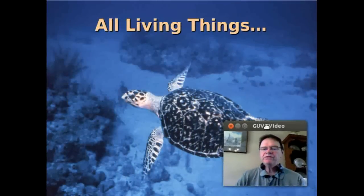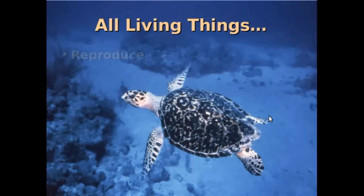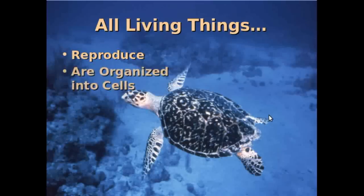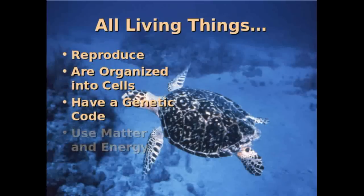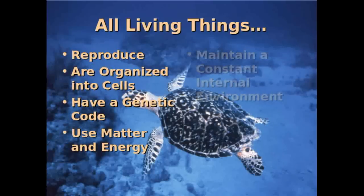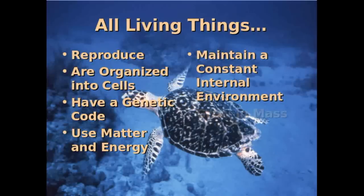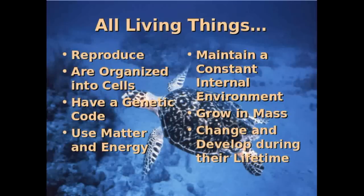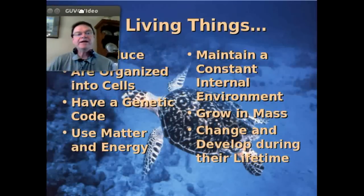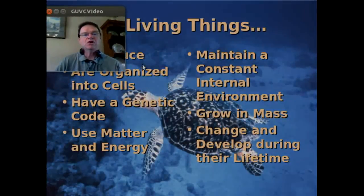So what do living things do? They reproduce. They're organized into cells. They have a genetic code. They use matter and energy — what we call metabolism. They maintain a constant internal environment — homeostasis. They increase in mass, and they change throughout their life cycle. So that's what living things are. Thanks for watching.